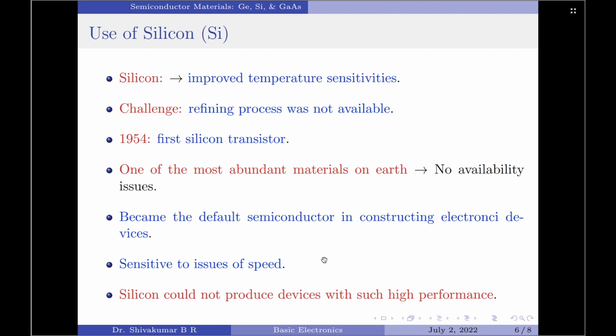Scientists soon found that silicon could not produce devices with such high performance and therefore a semiconductor material capable of meeting these new needs, which is higher speeds and higher levels of performance, had to be found.